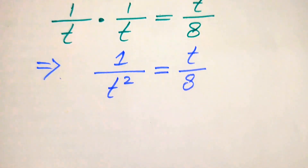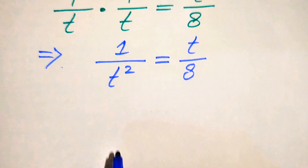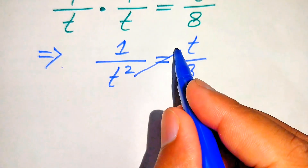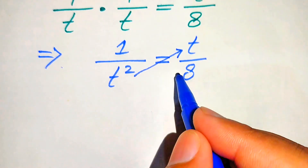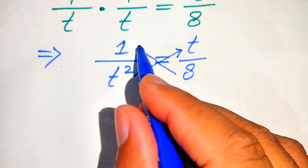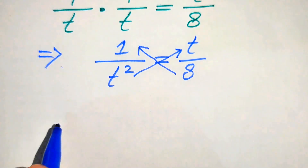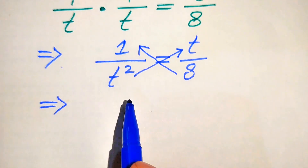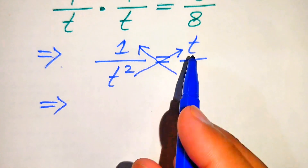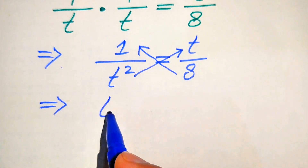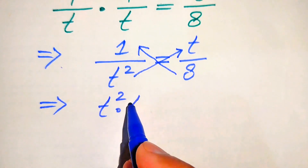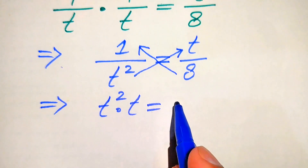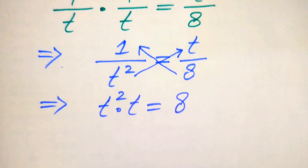In the next step we cross multiply the terms — we multiply this term with this value and we multiply 8 with 1. After cross multiplying, we have t squared multiplied by t equals t squared times t, and 1 multiplied by 8 equals 8.